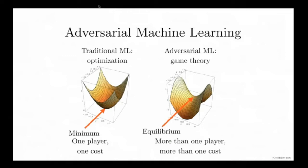On the right, I show you what happens when we start to have more than one player and more than one cost. A player might be something like a machine learning model, or it might also be a person or a program that is trying to interfere with the operation of a machine learning model. A concrete example is spam detection: we have a machine learning model that wants to recognize spam, and we have spammers who want to get their spam through the system.